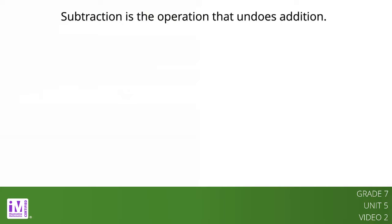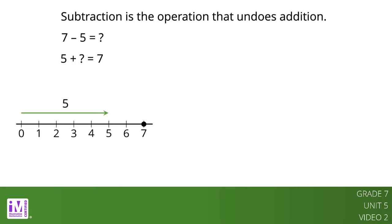Subtraction is the operation that undoes addition. This means that if we have a question like, what is 7 minus 5, the answer is the same value as the number we can add to 5 to get 7. Here is a diagram that illustrates the addition equation. To get the sum of 7, the second arrow must be 2 units long, pointing to the right. This tells us that positive 2 is the number that completes these equations: 5 plus 2 equals 7, so 7 minus 5 equals 2.